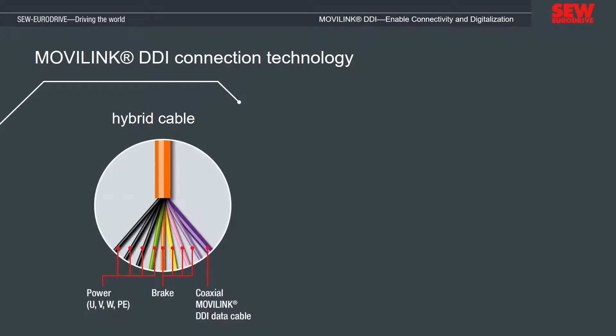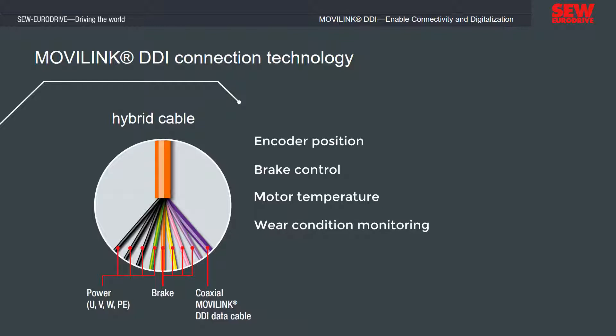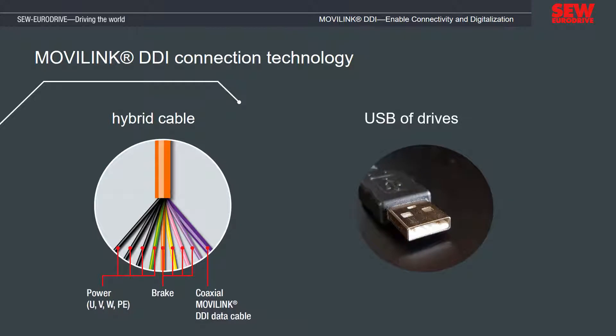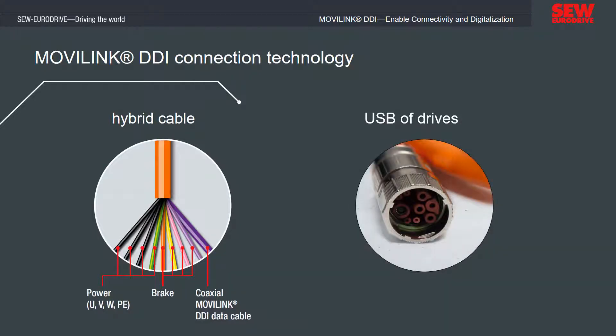Movilink DDI cables are hybrid cables. They not only support the motor route power, but also form a data channel for all information such as encoder position, brake control, motor temperature, and wear condition monitoring of drive components such as brakes. Movilink DDI is the USB of drive technology from SEW EuroDrive.